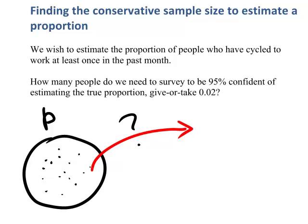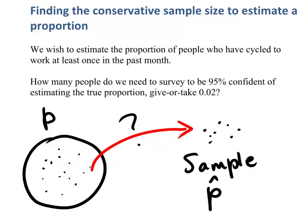But how many should we sample? Well, that depends on how precisely we want to estimate that true proportion. This sample will give us an estimate of that population proportion, and this estimate we make from the sample we call P-hat. We would expect that this sample proportion would give us an estimate close to that of the true population proportion if the sample was well collected. In other words, there will be an interval surrounding the sample proportion in which we would expect to find the value of that true population proportion.